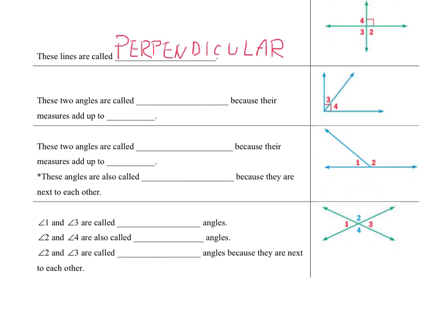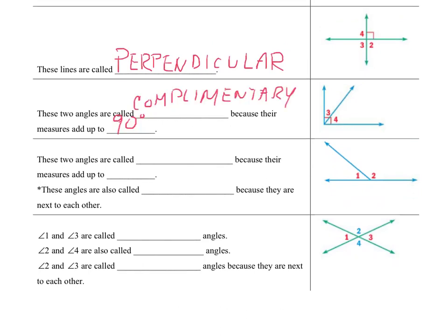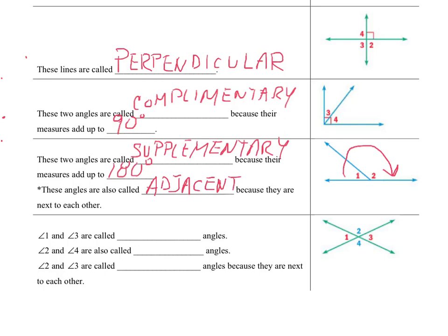Next, we have angles 3 and 4 that, when you add them together, are called specific types of angles. These two angles are called complementary angles, because their measures add up to 90 degrees. The next pair, angles 1 and 2, if you were to put them together, make up 180 degrees. Therefore, these two angles are called supplementary, because their measures add up to 180 degrees. These angles are also called adjacent, because they are next to each other and share that common ray in between them.